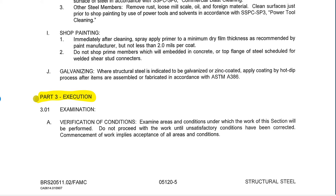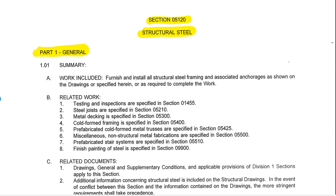So let's jump back up to the general and step through this section by section. At the top here we have a summary of the work included. What's interesting to see here is the word 'furnish and install.' This means that this scope of work includes producing the steel and fabricating the steel — so the furnishing would be fabricating — and then installing, which in steel means erecting steel. So we've got fabrication and erection of steel.